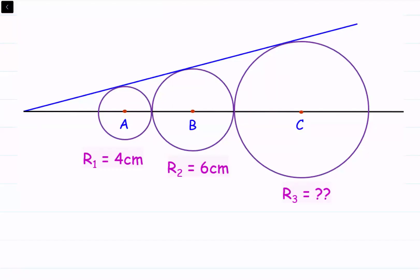In this question, three circles are touching each other and their centers are all on one line — the black line. There is one common tangent for all three circles. For the two smaller circles, the radius is given as r1 = 4 cm and r2 = 6 cm. We have to find the radius of the third circle.